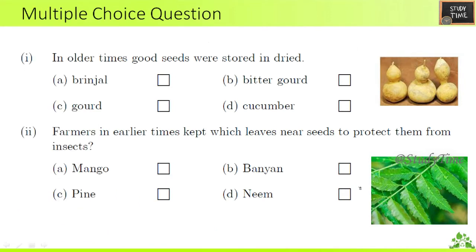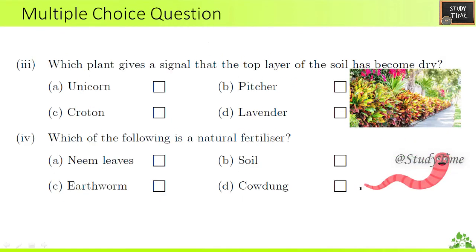Multiple choice questions: First — in olden times, good seeds were stored and dried so that they are good. Second — farmers in earlier times kept which leaves near seeds to protect them from insects — neem leaves. Third — which plant gives a signal that the top layer of soil has become dry — it is croton. Fourth — which of the following is a natural fertilizer — it is earthworm.